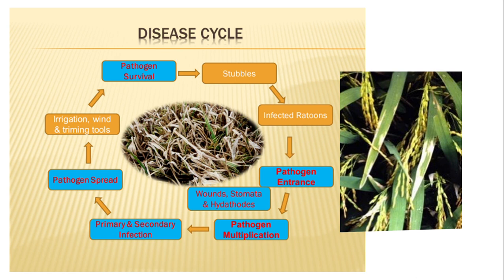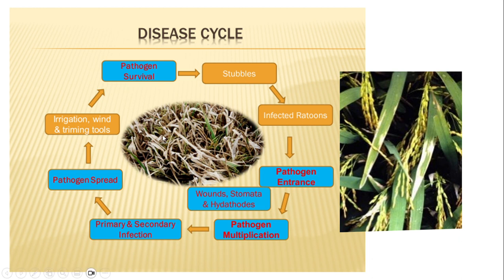What is the disease cycle of this disease? The pathogen survives in the stubbles and infected ratoons, and then bacterial cells enter through wounds, stomata, and hydathodes into the plant tissues and multiply there. Secondary infection takes place through irrigation water, wind, and farm tools, and the pathogen causes infection in healthy plants, then survives and the cycle starts again.